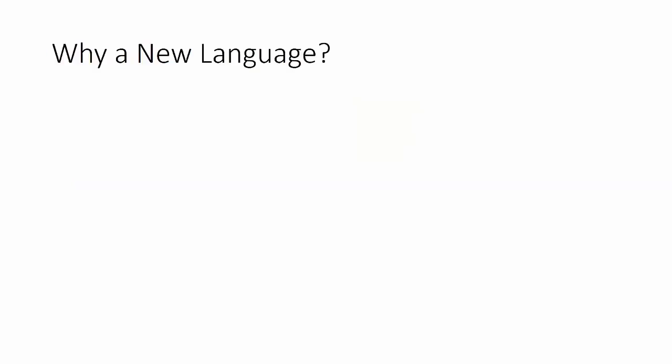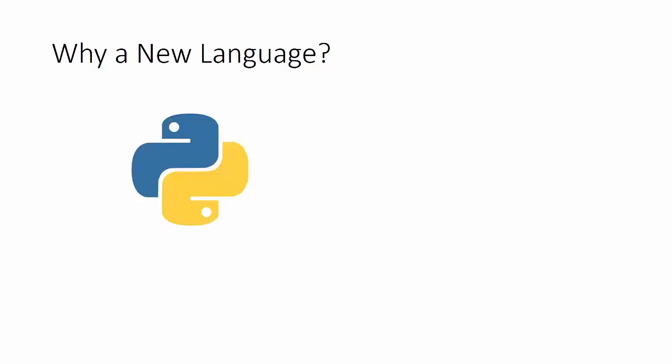One of the questions we need to understand is: why create a new language at all? To understand that, we have to look at the languages common inside of Google at the time Go was being designed — really three languages were key: Python, Java, and C and C++. The Go designers started to recognize there were some limitations that might not be fixable, given the history and designs of those existing languages.